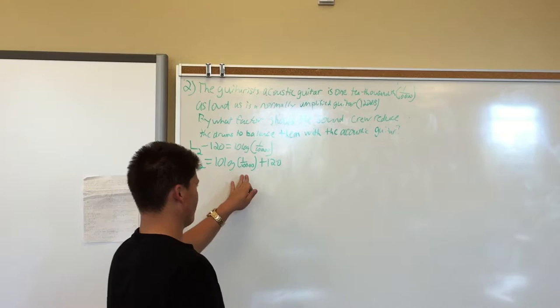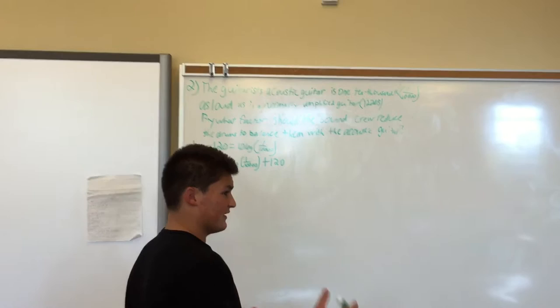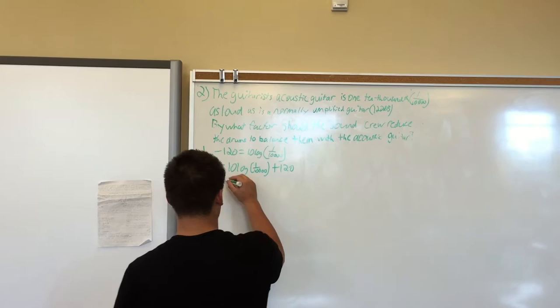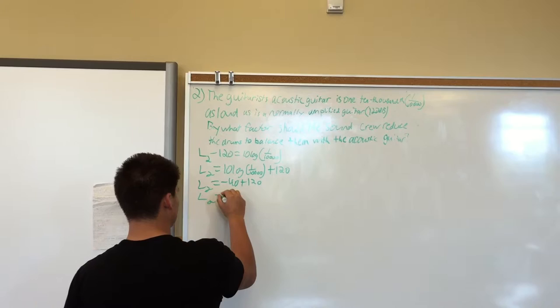From there we're going to solve 10 log 1 over 10,000, and then add 120 in the next step on the calculator to get perfect accuracy. So L2 equals 10 log 1 over 10,000, and we know that's negative 40 plus 120. We add that together, and that becomes L2 equals 80.